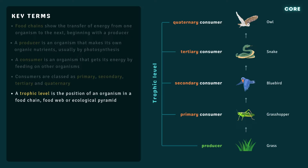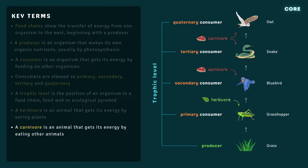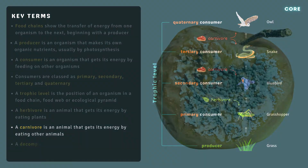The first trophic level contains producers, the second primary consumers, and so on. The primary consumer is a herbivore, which is an animal that gets its energy by eating plants. The secondary, tertiary, and quaternary consumers are all carnivores, which are animals that obtain their energy by eating other animals.